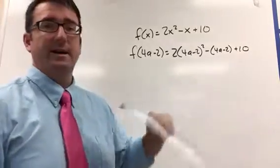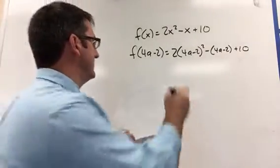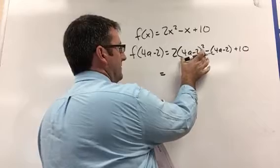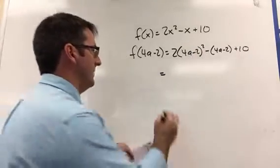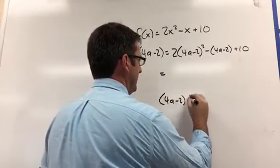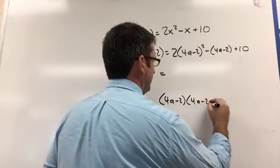Alright, now let's expand that and then simplify it. So 4a minus 2 squared, remember that's 4a minus 2 times 4a minus 2.